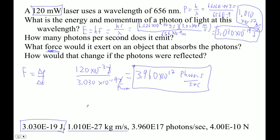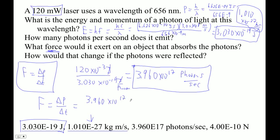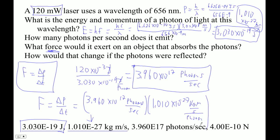Now we can figure out the force. Force is change in momentum over time, so that's 3.960×10¹⁷ photons per second times 1.010×10⁻²⁷ kilogram-meters per second per photon. The photons unit cancels, and we're left with kilogram-meters per second squared, which is of course a newton. So this number times alpha-b — where I stored the momentum, using unrounded numbers — gives 4×10⁻¹⁰ newtons exactly, according to my calculator.